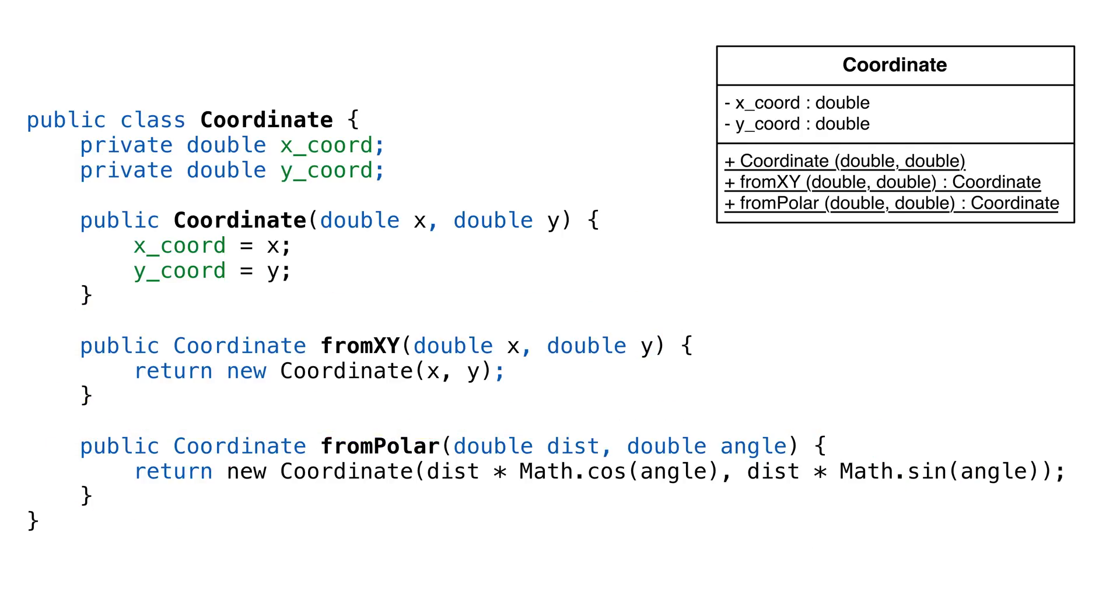We'll ignore any calculation errors. The polar method will convert to x and y, and then create the coordinate. Our x, y method just creates the coordinate.